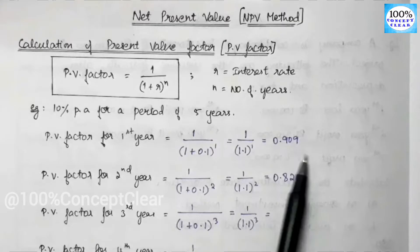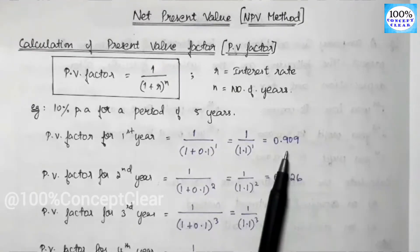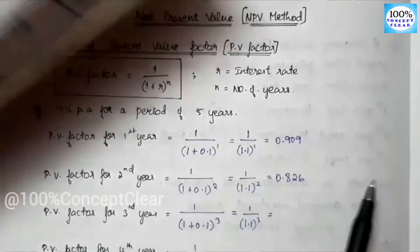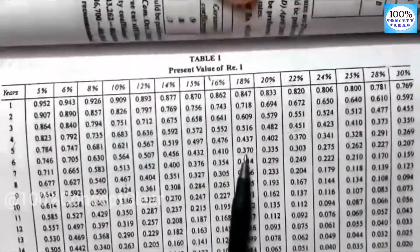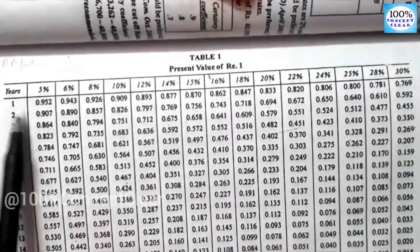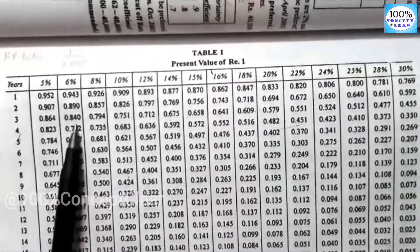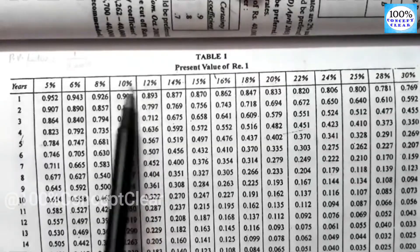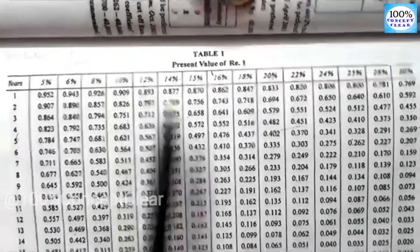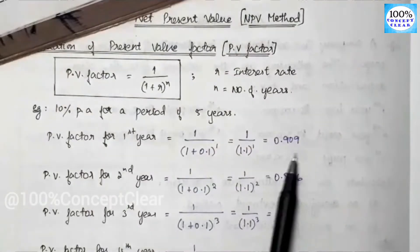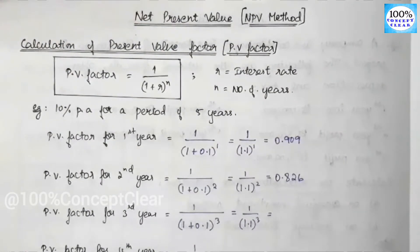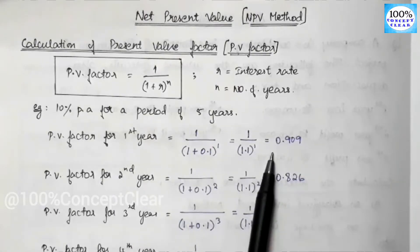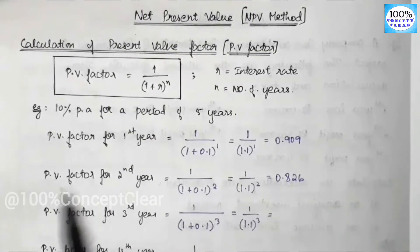We can verify this against the table. At 10% per annum, the first year PV factor in Table 1 is 0.909 — which matches our calculation. Now let's calculate the second year PV factor using the same formula: 1 divided by (1 + 0.1) to the power 2.